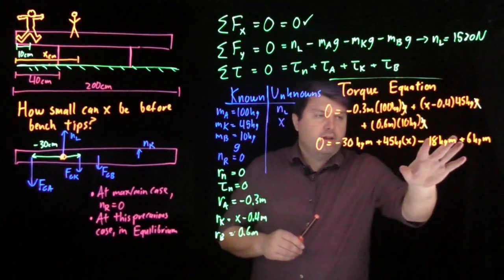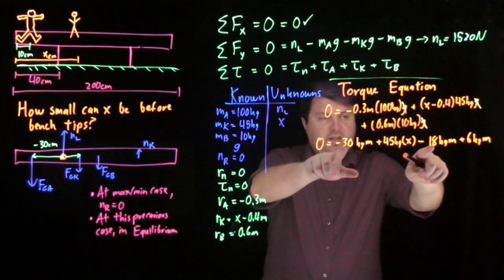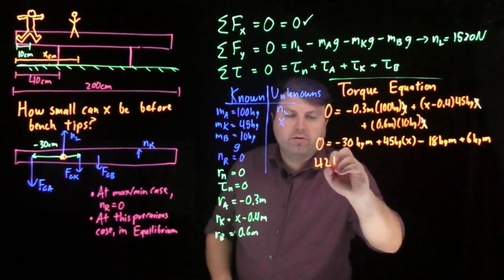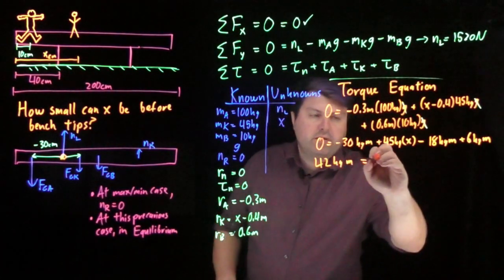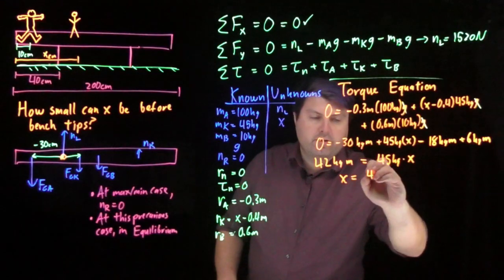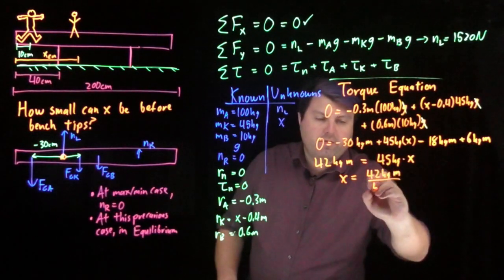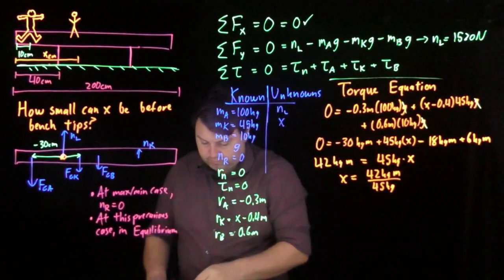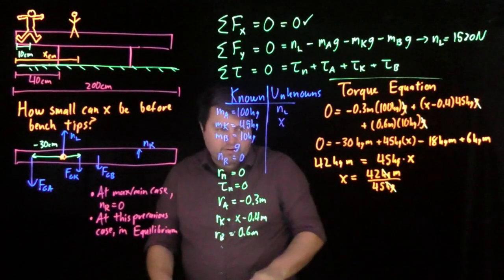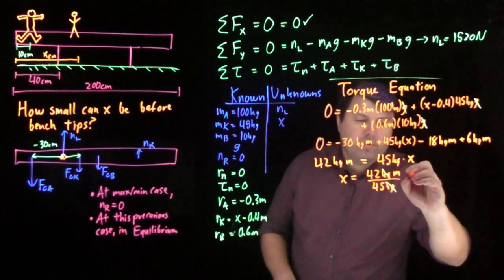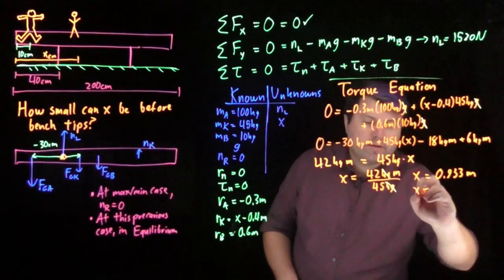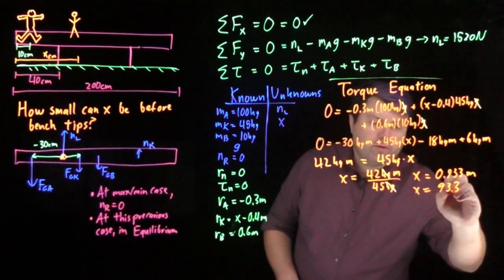So we can bring all of our kilogram meters over to this side. 30 plus 18 is 48. With 6 on the other side is 42. So we have 42 kilogram meters equals 45 kilograms times x. So our x is 42 kilogram meters divided by 45 kilograms. Our kilograms cancel for us. And 42 divided by 45 is 0.933. So we have our x is 0.933 meters, or 93.3 centimeters.